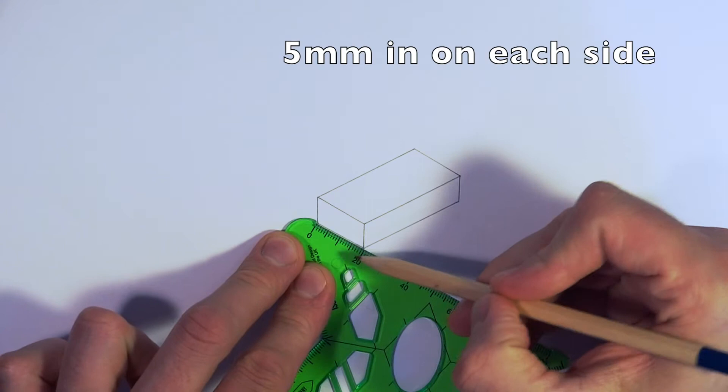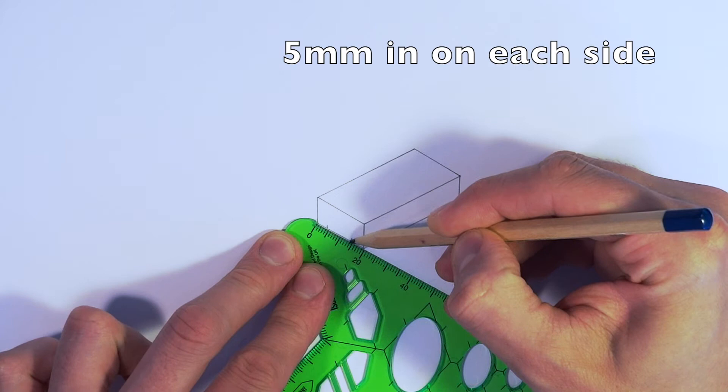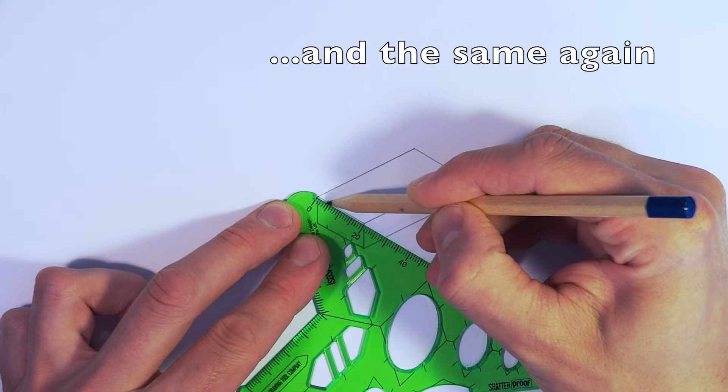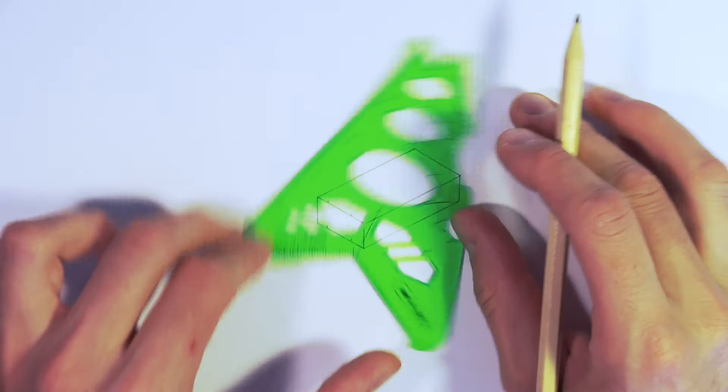What we're going to now do is mark 5 millimeters in from each side on this bottom line here. So just using the ruler edge, marking 5 millimeters in on both these lines, the top and the bottom of this end of our chassis block. This is actually the rear of the chassis.